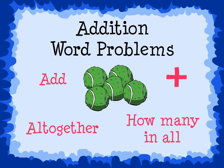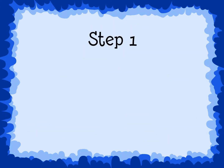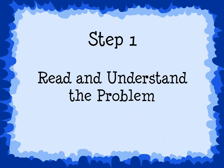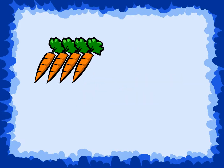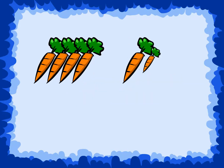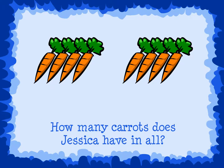Here are three steps to solving a word problem. Step 1: Read and understand the problem. Here's an example. Jessica has four carrots. Her mom bought her four more carrots. How many carrots does Jessica have in all? We need to find out how many carrots Jessica has in all.